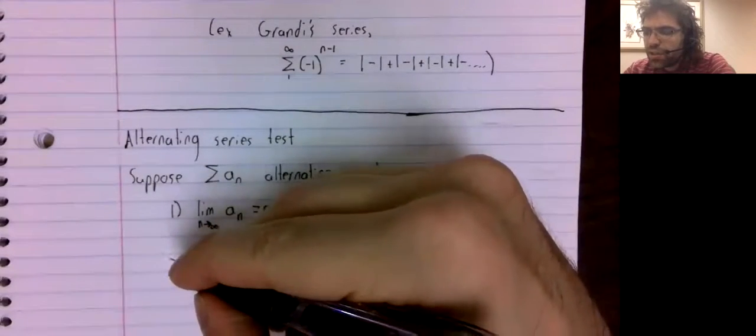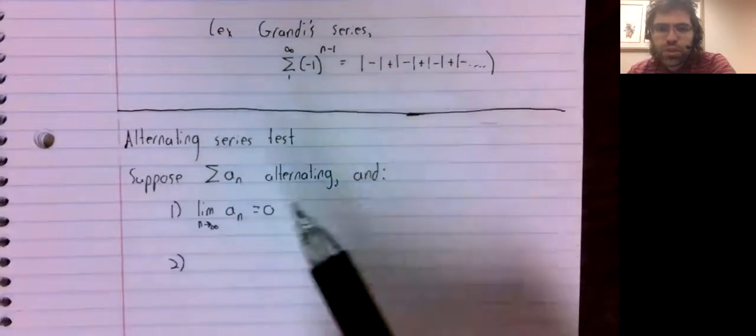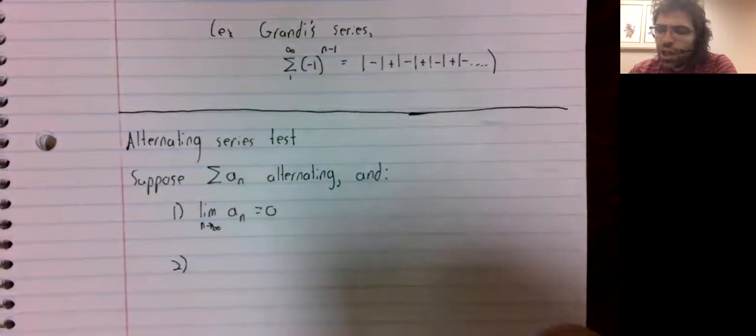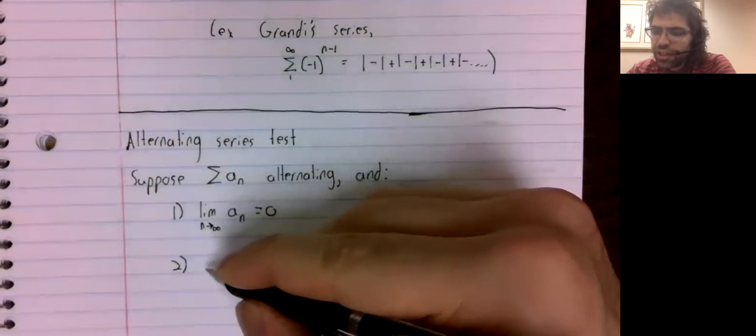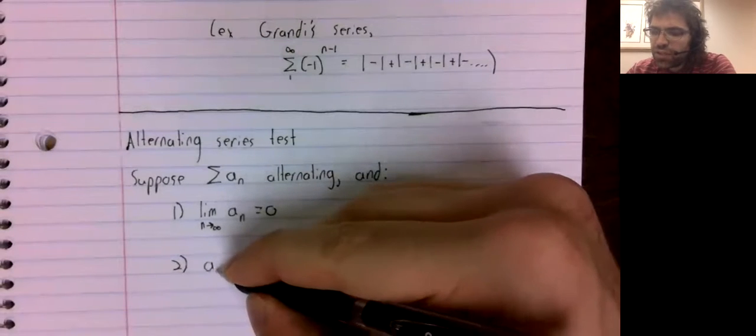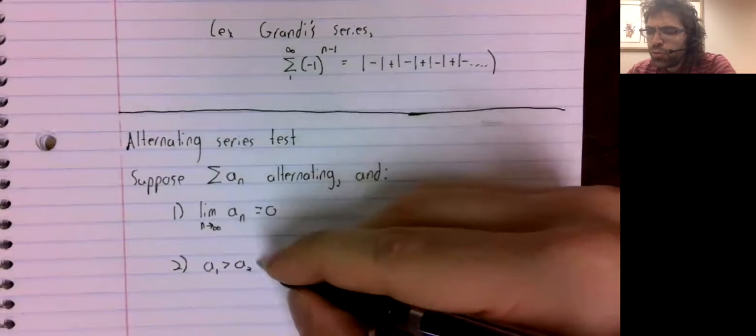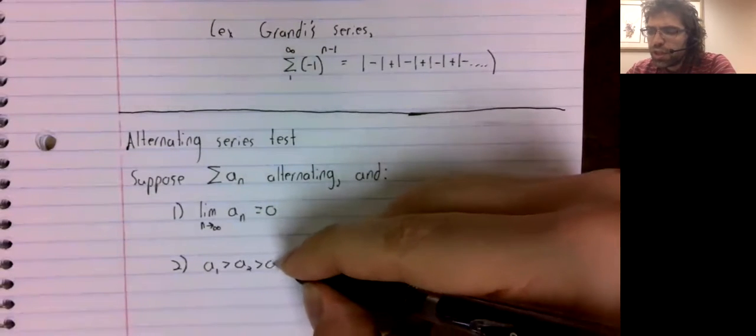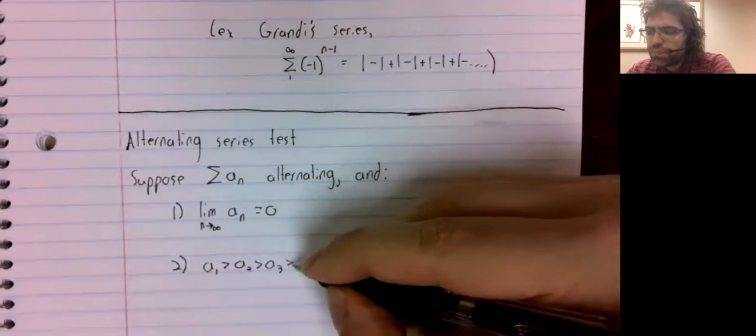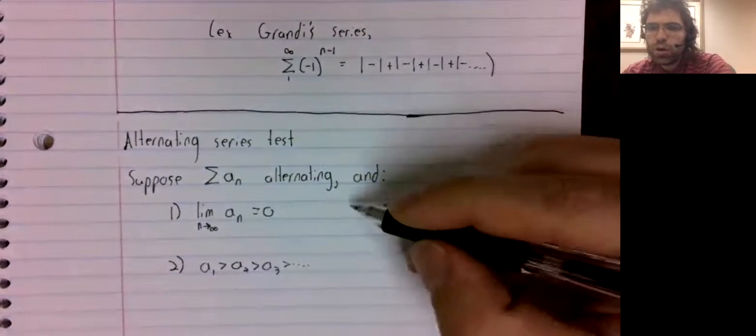Second, the terms of this series are decreasing. That is, a₁ > a₂ > a₃ and so on.